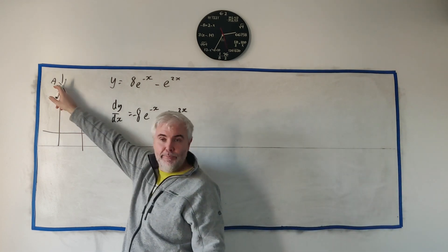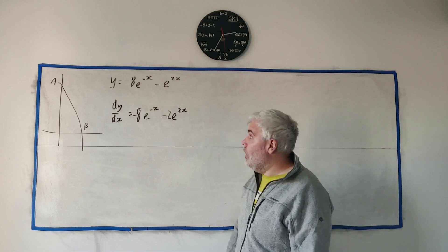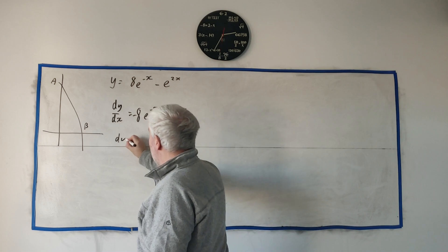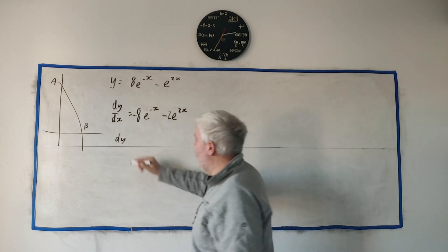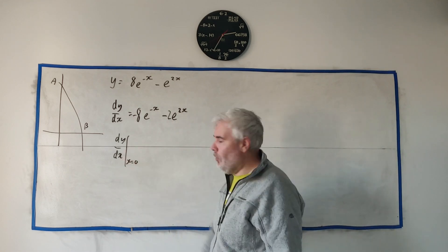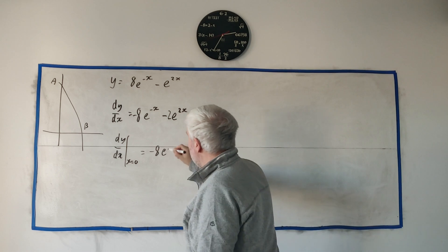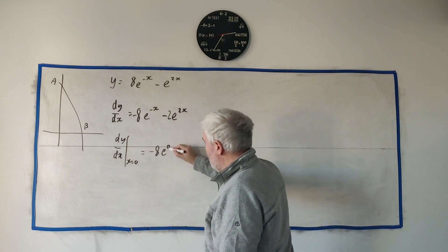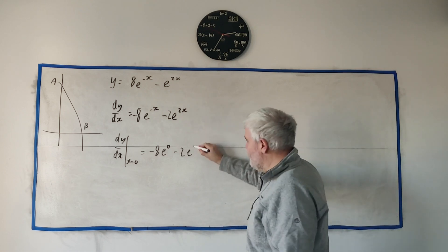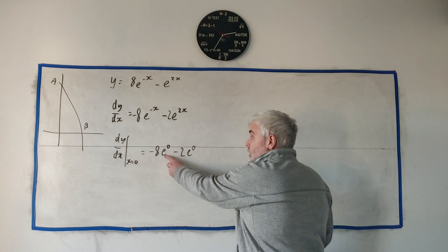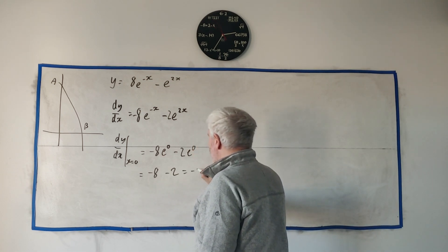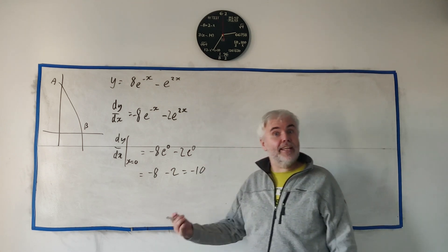They want to know about it at this point. So what do we know about the point A? We know x equals 0. So we just do this again but instead of x we put in 0. So that's dy/dx at x equals 0, which equals minus 8 e to the power of 0 minus 2 e to the power of 2 zeros. Anything to the power of 0 is 1, so this becomes minus 8 minus 2 which equals minus 10. That's the answer to part A.